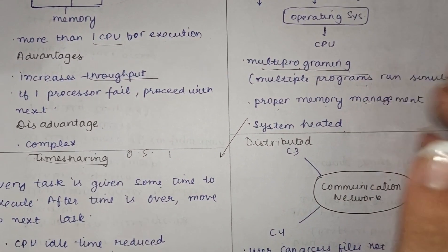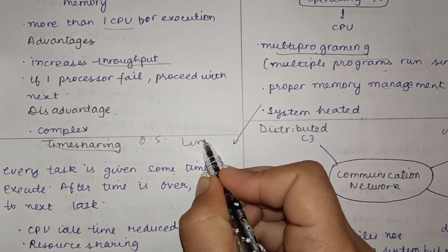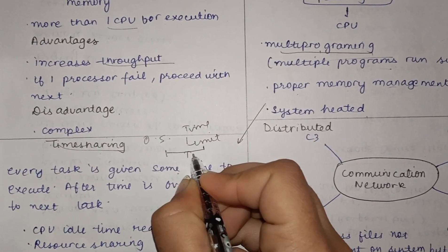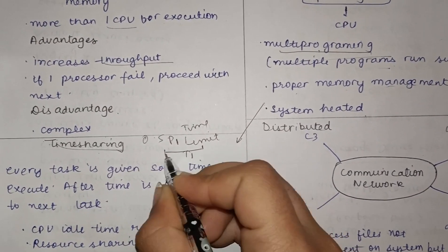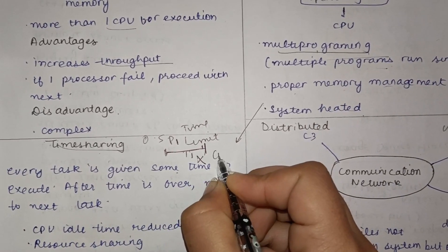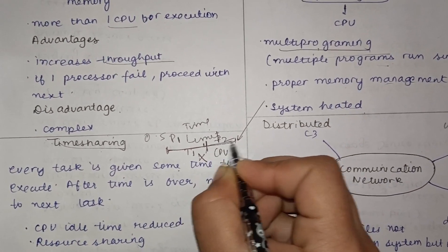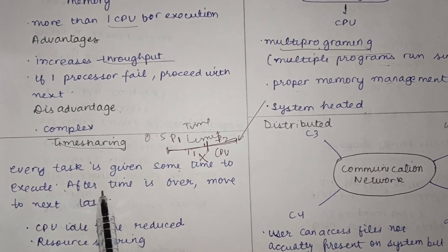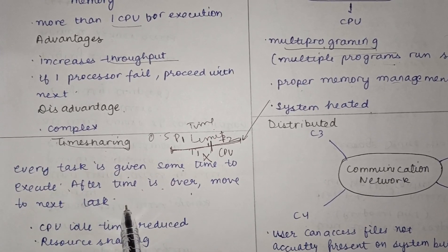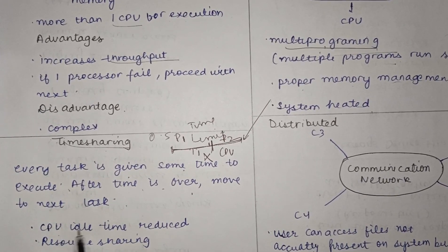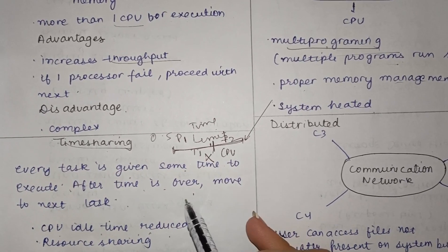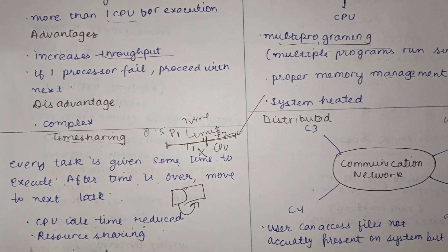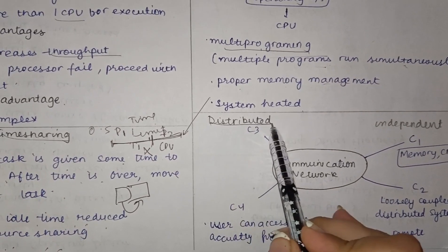Time sharing is also called multitasking, but with defined time limits. For example, a time quantum t1 is given to process P1, and once t1 expires, the CPU automatically moves to process P2 in the next time interval. Every task is given some time to execute, then the CPU moves to the next task. This reduces the CPU's idle time and helps achieve better resource sharing.